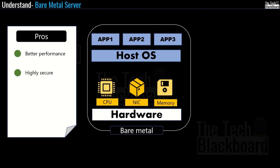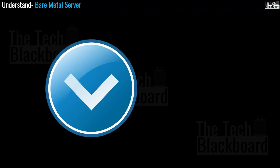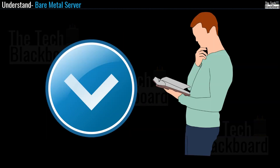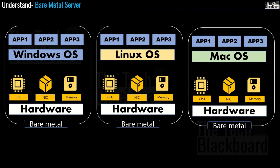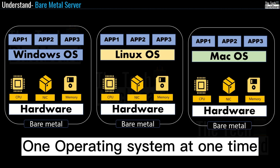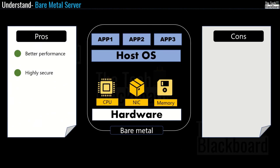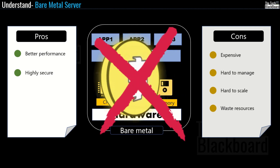Now that we've seen what bare metal servers are good at, let's check out some of the cons. Let's say that for most of your business you are running applications on Windows, but now you are launching a new app that needs to be compatible with Linux and Mac operating systems. The problem is that your bare metal server can only run one operating system. Even if you are not utilizing the full capacity of your Windows server, you would still need to buy separate servers — one for Linux and one for Mac. Due to all these problems, bare metal servers are expensive, hard to manage, hard to scale, and a lot of resources get wasted — which means a lot of money is also getting wasted.